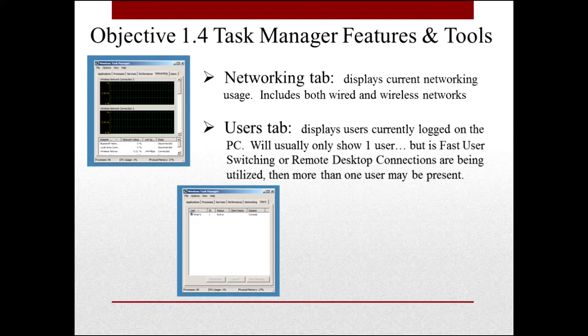Next up is the Networking tab, which displays the current network usage and includes both wired and wireless networks. Then there's the Users tab. For most users this is not very useful because there will only ever be one user logged in, but if you have fast user switching enabled or remote desktop connections are present, you'll see more users under this tab.